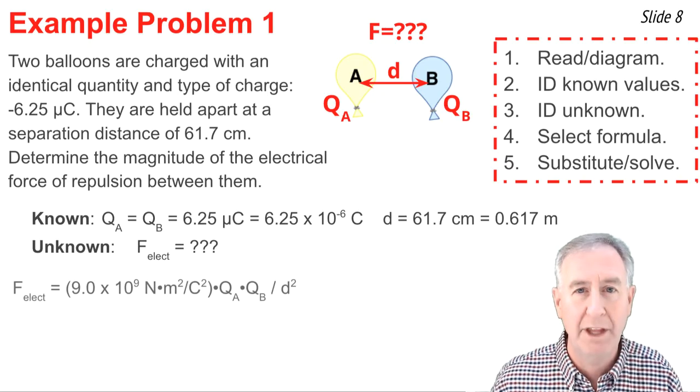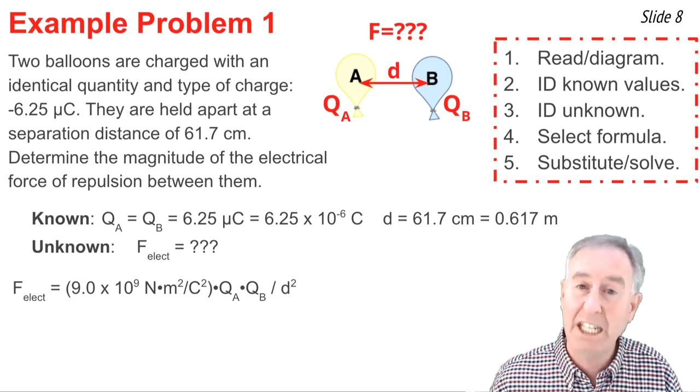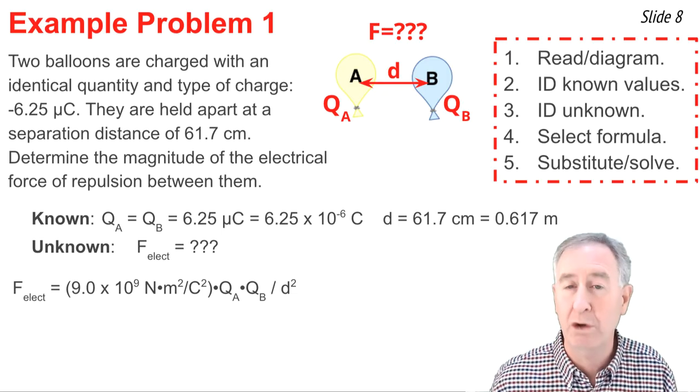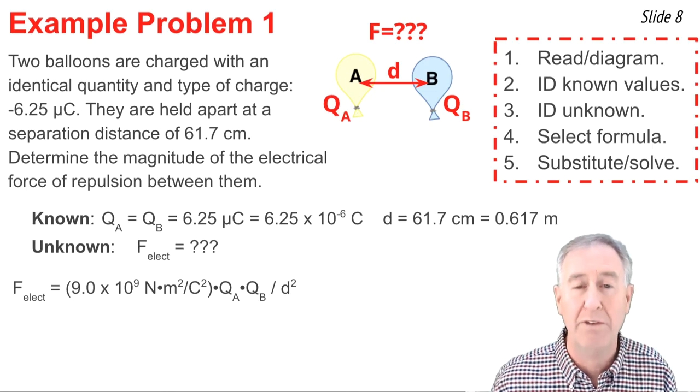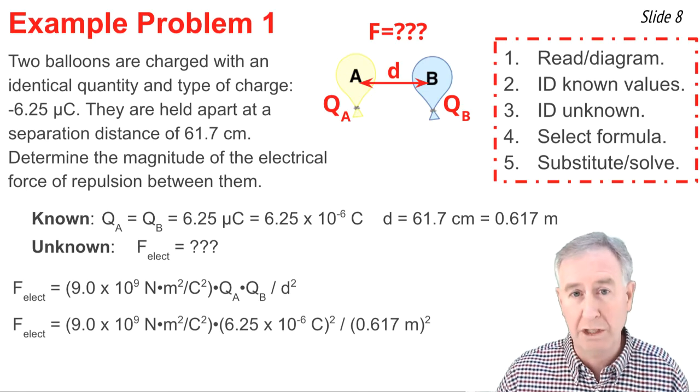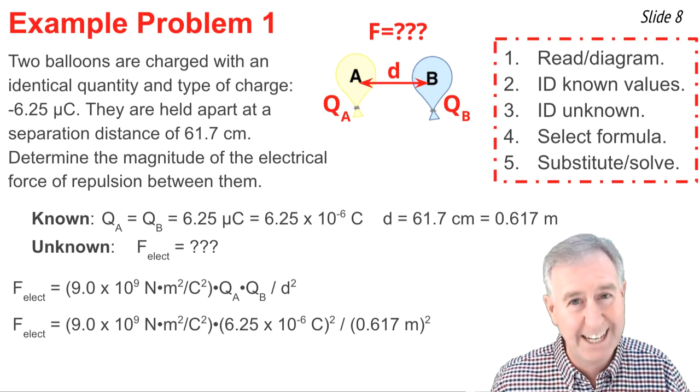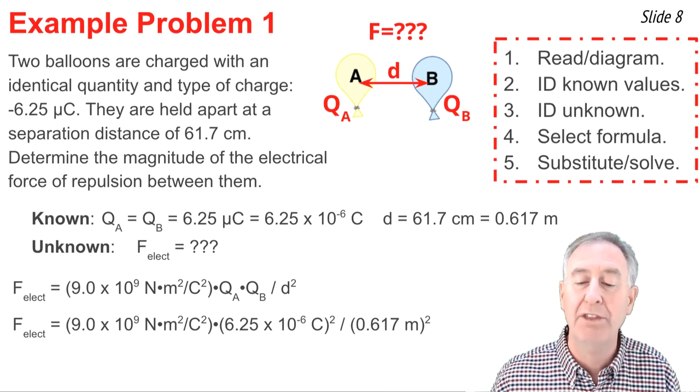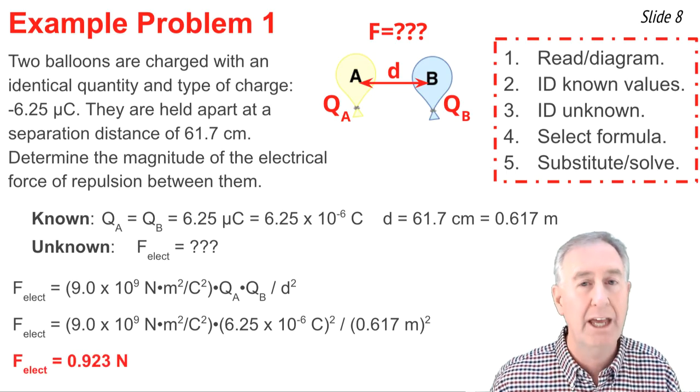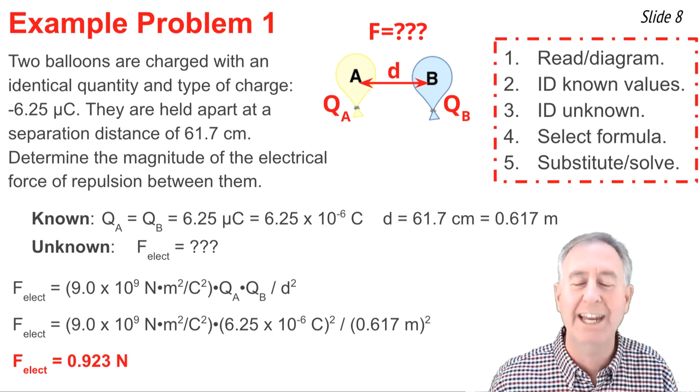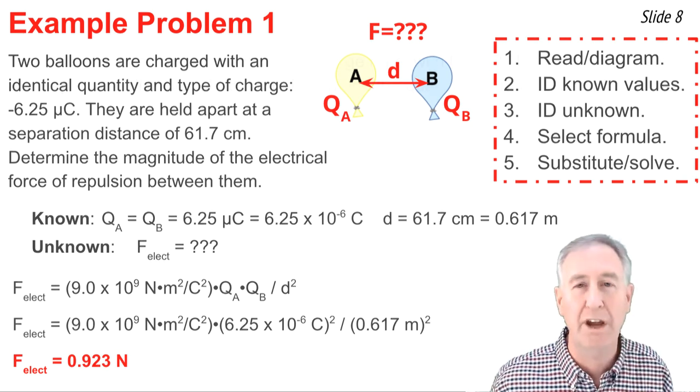I write the equation down and then I make substitutions of QA, QB, and D into this equation. I use units of Coulombs and meters because that's the units used on the value of K. Here's my substitutions. Now I pull out my calculator, one I'm comfortable with that I know how to use. And I carry out the completion of this problem on my calculator. Carefully, I enter numbers in the proper operations and I get 0.923 newtons as my value for F electrical.